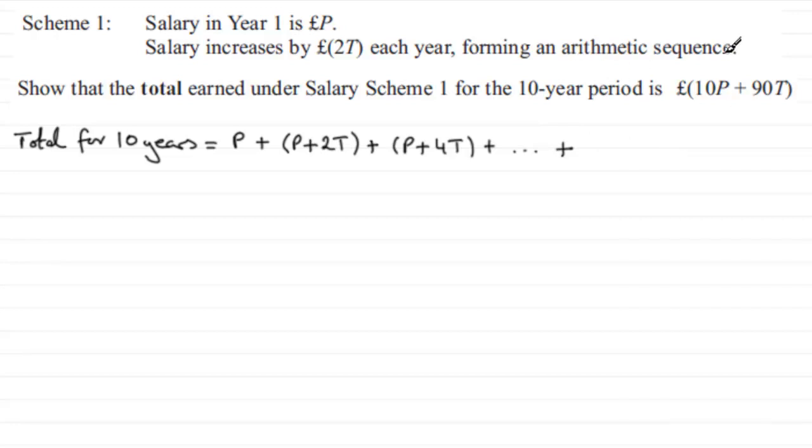Now we're dealing with an arithmetic sequence because it goes up by the same amount each year, often called the common difference, d. And in this example, that value of d, the common difference, is going to be 2T. Now I'm assuming that you're familiar with arithmetic sequences and all the formulas that are used in it. If not, here's just a very quick summary.